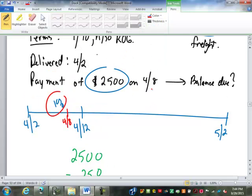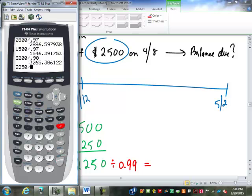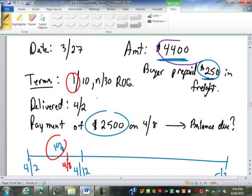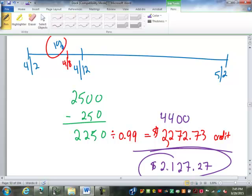What are we going to divide the $2,250 by? Well it's a 1% discount, so we divide by 0.99, which gives us $2,272.73. That is the amount credited towards merchandise. Now in this case, the $4,400 was all merchandise. The $250 for freight was separate from that. So we're just going to take our $4,400 and subtract the $2,272.73, which is going to give us $2,127.27. That is the balance due. Any questions? How many of you feel comfortable doing problems like this by yourself right now?